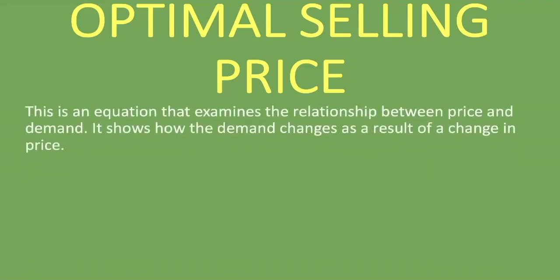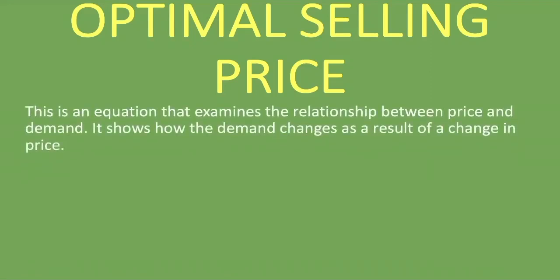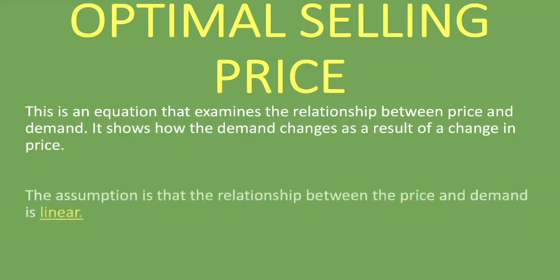The equation examines the relationship between price and demand — it shows how demand changes as a result of a change in price. The assumption is that the relationship between price and demand is linear. That is the assumption made when dealing with the optimal selling price, and you'll see what I mean by this in the graph that follows.